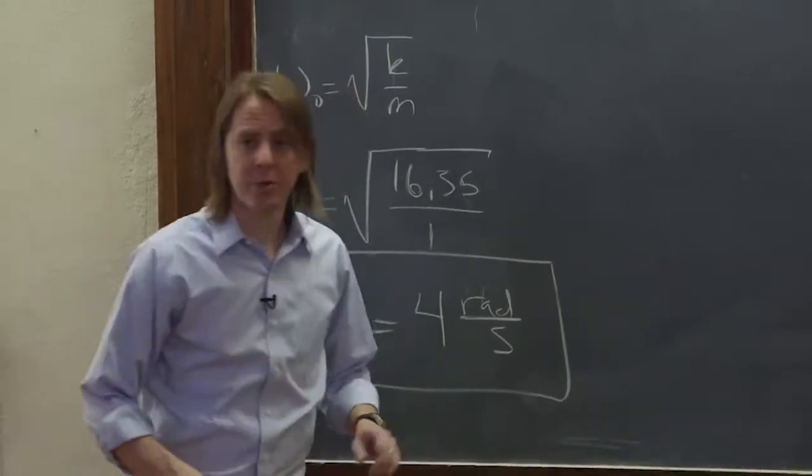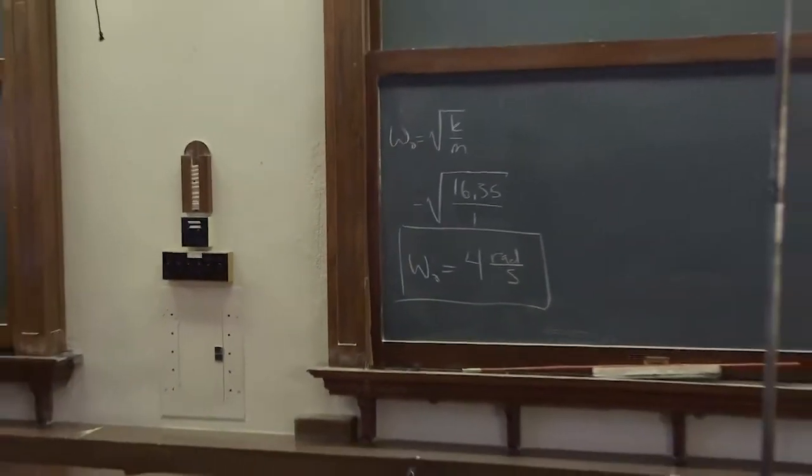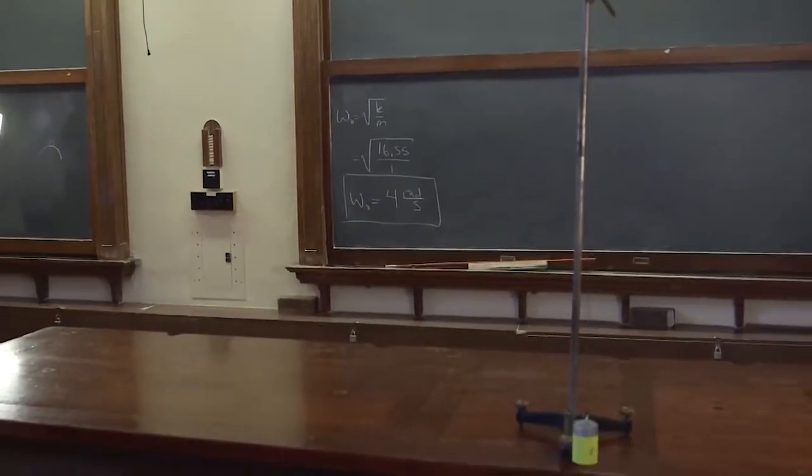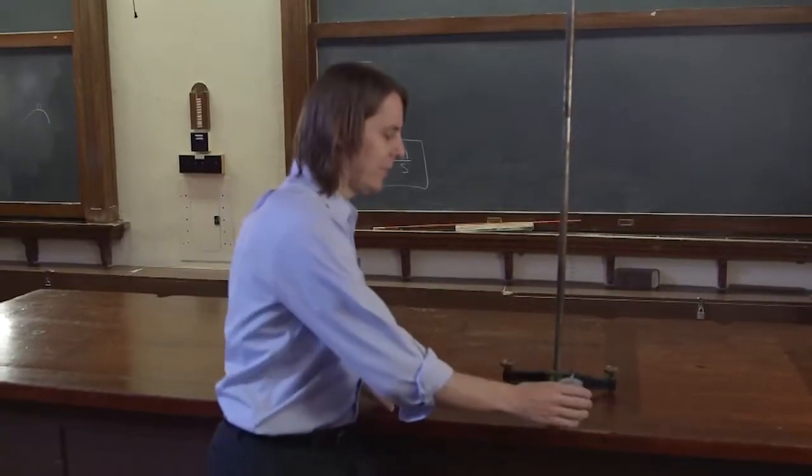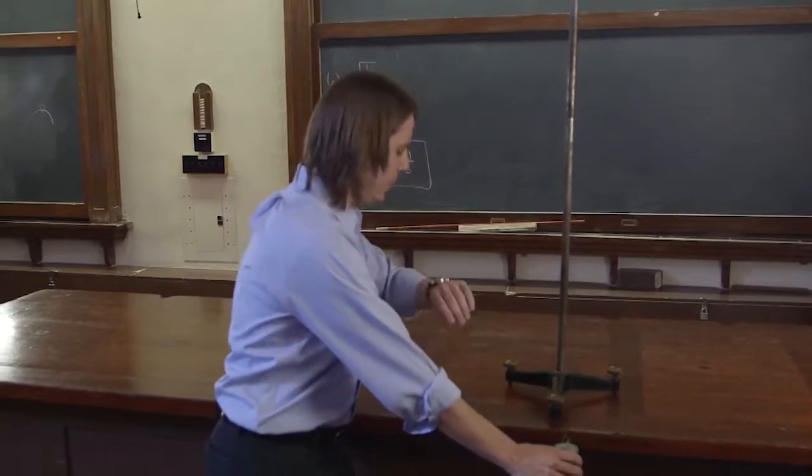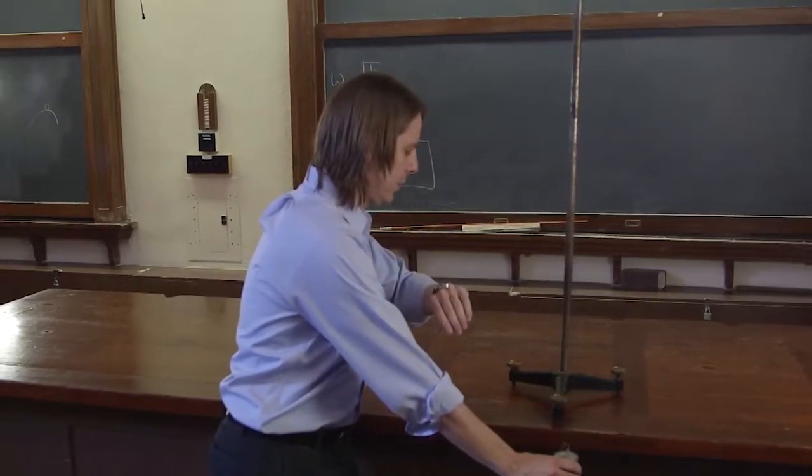Now let's actually measure it and see what we get. So to get it a little more accurate, I'm going to measure 10 cycles, and then we'll divide by 10 to get the period. So I'm going to hold it down here and say, go.